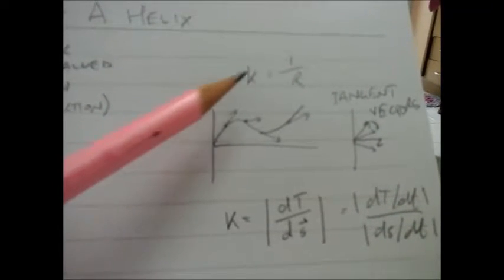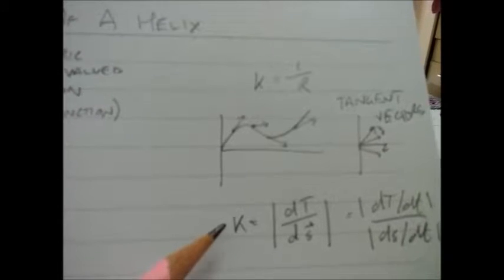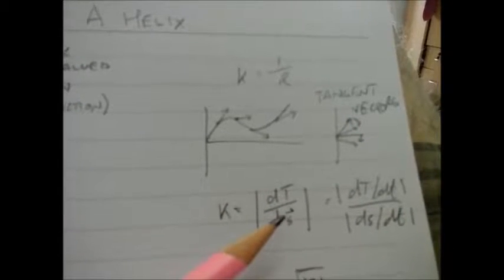So, moving down here then, instead of defining curvature as one over the radius, I could also define it as how much these tangent vectors change with respect to how far along the curve we move.